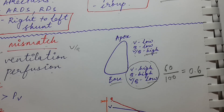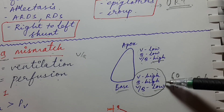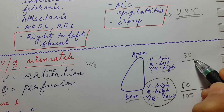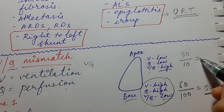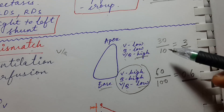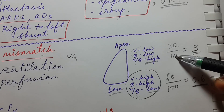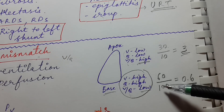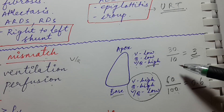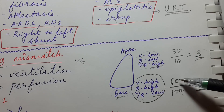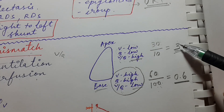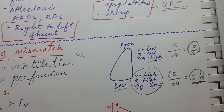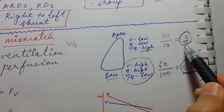As we move from base to apex, both ventilation and perfusion decrease. At the apex, suppose ventilation is 30 and perfusion is 10 — the VQ ratio is 3. Although both decrease moving from base to apex, the decrease in perfusion is much greater than the decrease in ventilation. That's why the VQ ratio is higher at the apex and lower at the base.